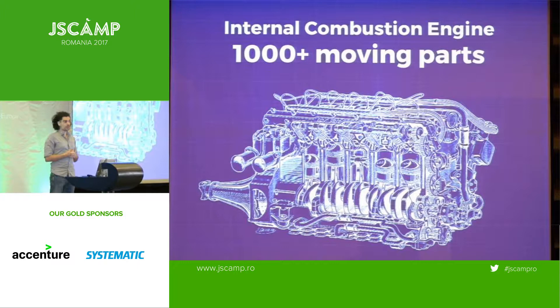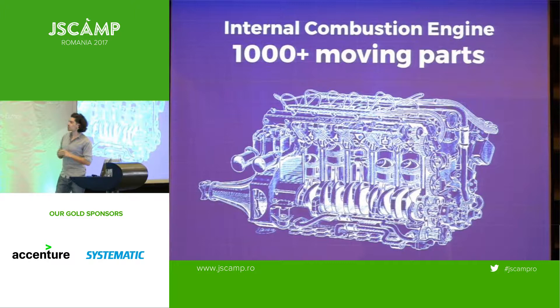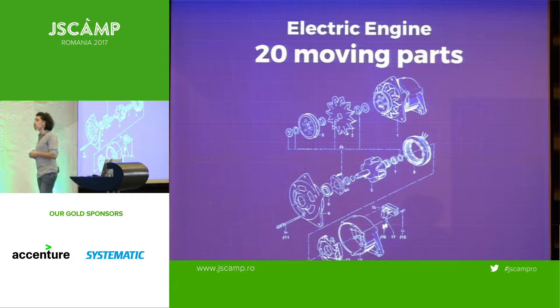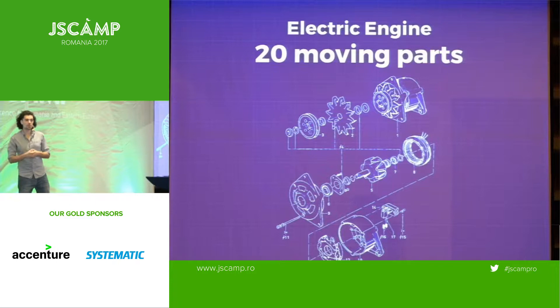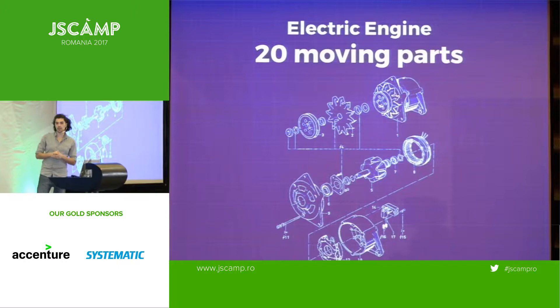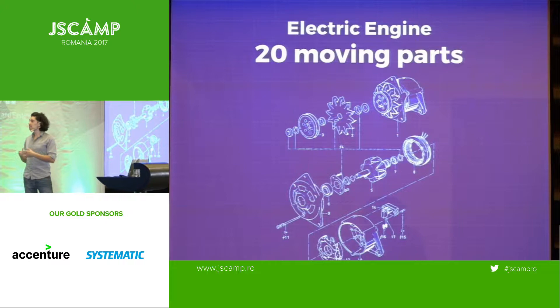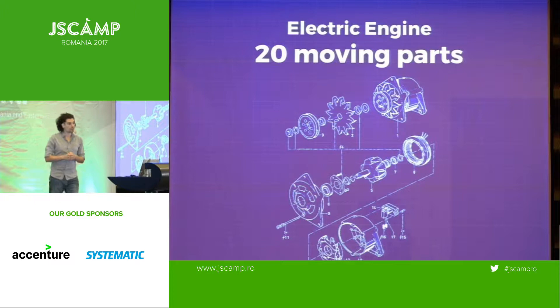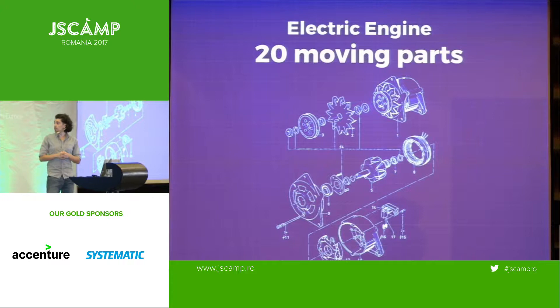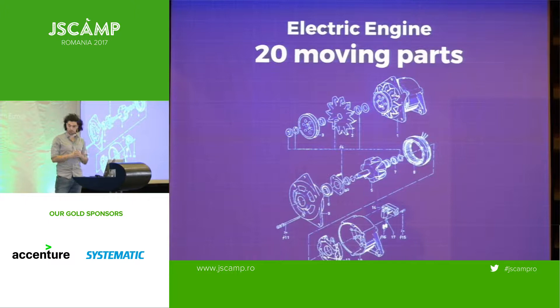100 years later, something changed. Something made this huge composition of functions and keywords and processes redundant. In an electric engine, there are only 20 moving parts. It is so simple that you can do it yourself at home. You don't need so many engineers or technical qualifications. It's way simpler, and by doing this, we get a lot of additional benefits — electric engine cars have the safest ratings and also provide a different way of caring for the planet.